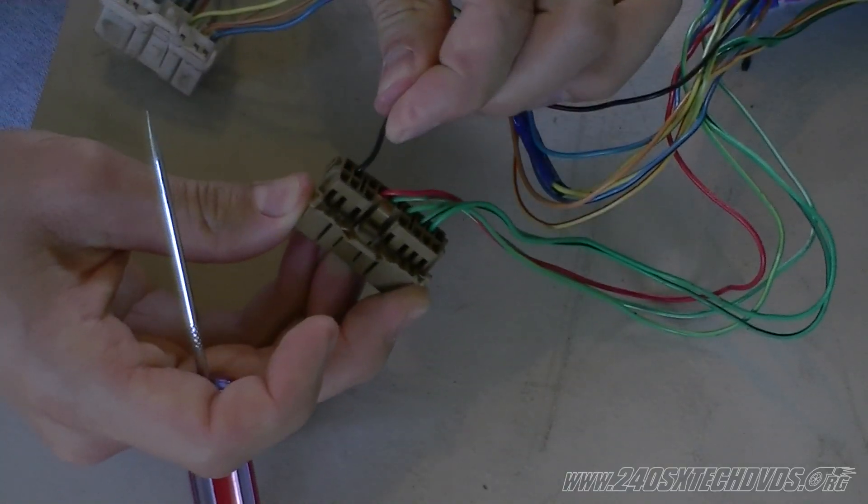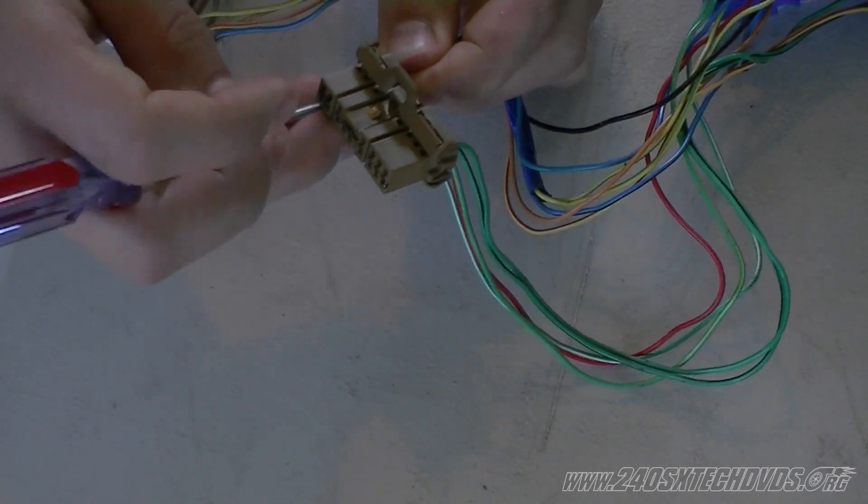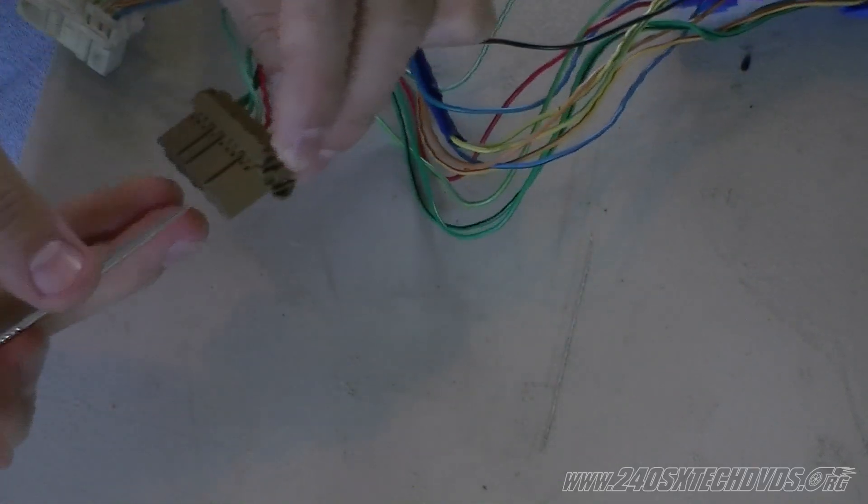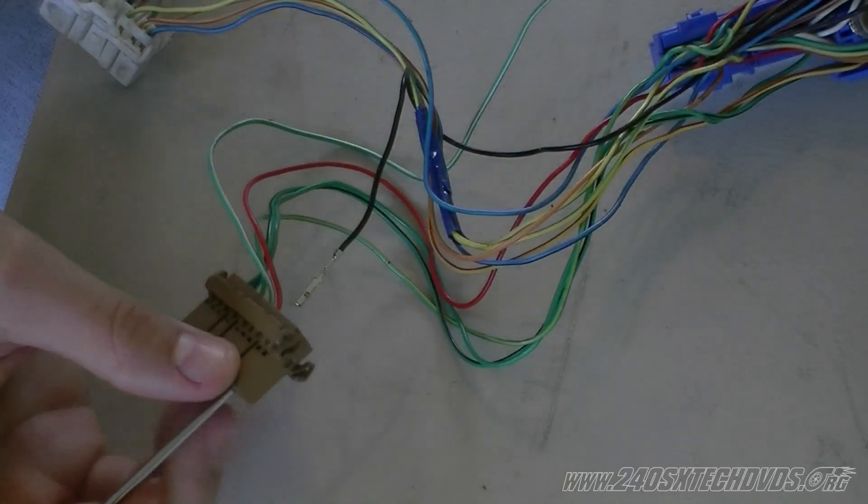Next is the black wire here. This is our ground wire on our dual overhead harness. We're going to remove it, and that one's off.